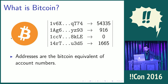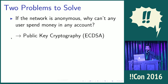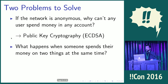That's actually kind of amazing because there are two problems that seem immediate. First, if you have an anonymous network, how come you can't have anybody spending the money in any account? As it turns out, you can solve that problem with public-key cryptography — ECDSA, the elliptic curve digital signature algorithm. The idea of using digital signatures for digital money is actually old, it's from the 80s. Another problem is what happens when someone spends their money on two things at the same time. This is the thing that made cryptocurrency a thing — Bitcoin is the first cryptocurrency to really effectively solve this double-spending problem.